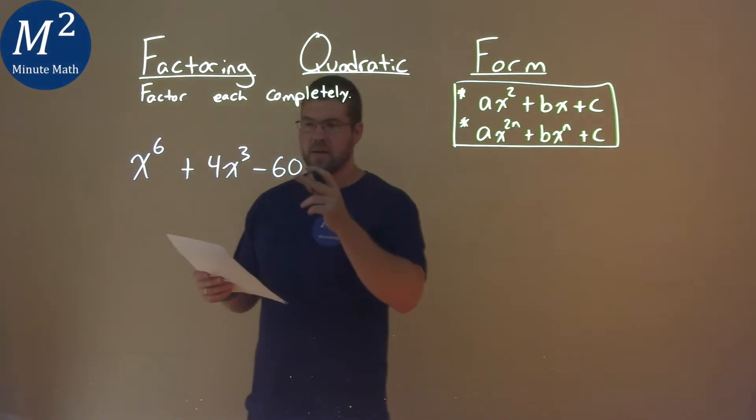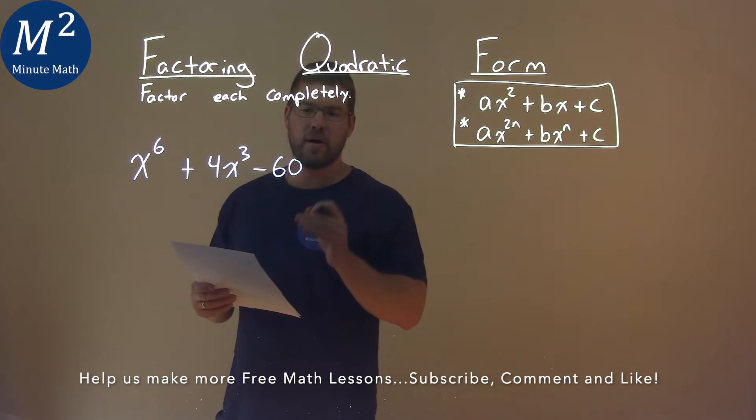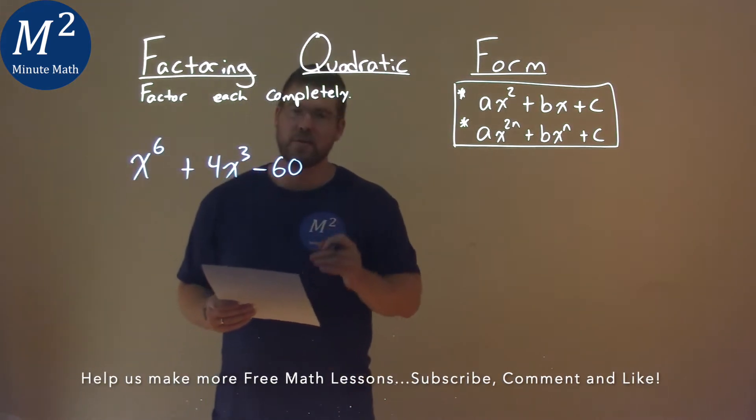We're given this problem right here: x^6 + 4x^3 - 60, and we need to factor this completely.